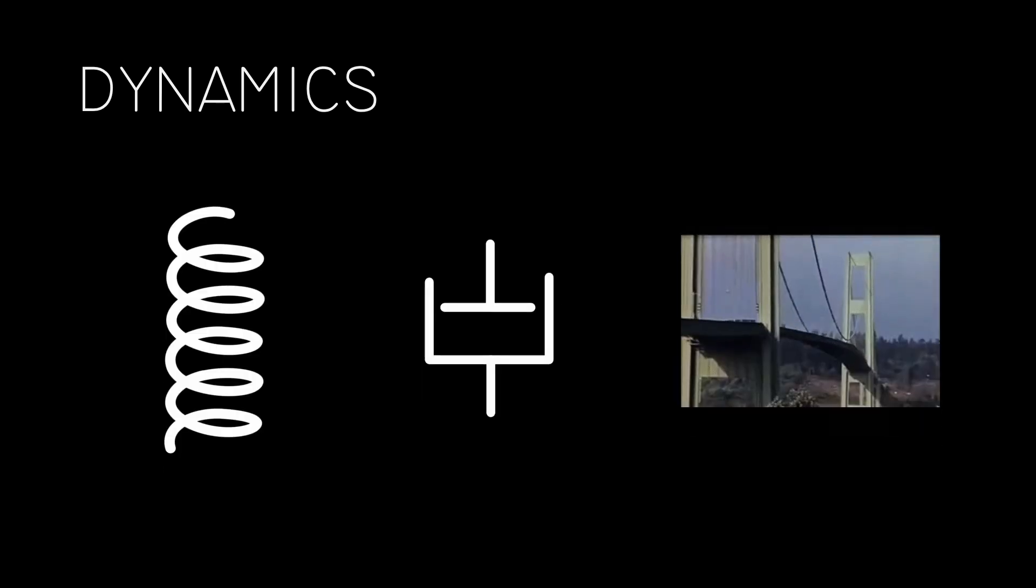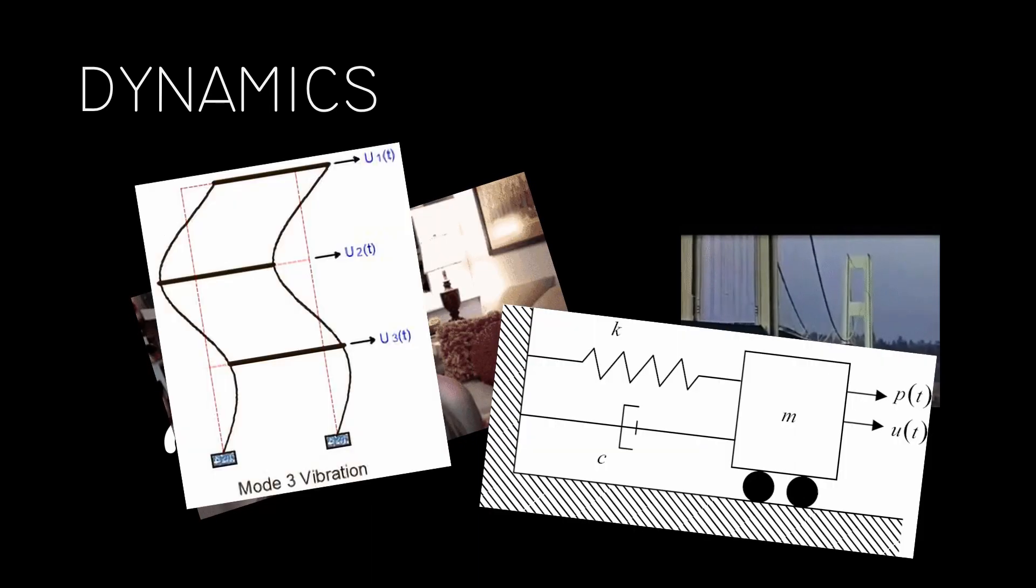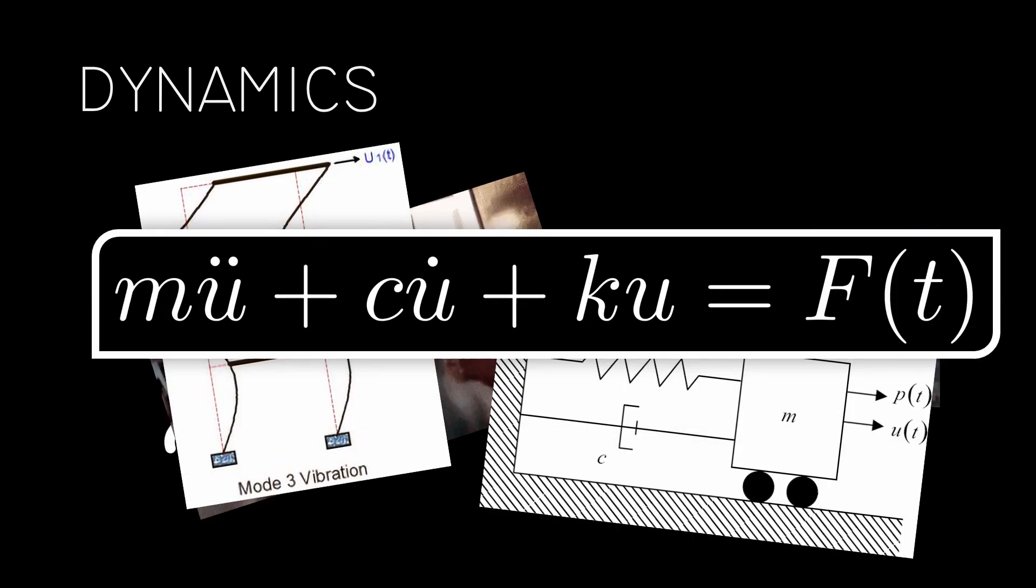So dynamics. We have springs, we have dampers, we have resonance, we have earthquakes, we have single degrees of freedom, multiple degrees of freedom, but most importantly we have the motion equation which we will be deriving shortly.